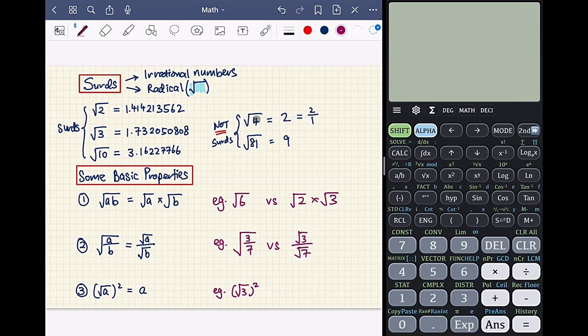Some non-examples of surds are square root 4 and square root 81. We all know that square root 4 is actually 2, and this is a rational number because it can be written as 2 over 1. So we say that square root 4 is not a surd.